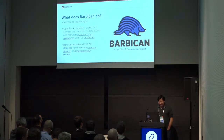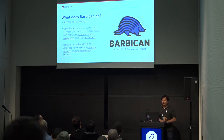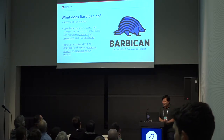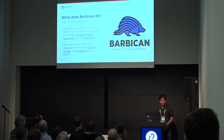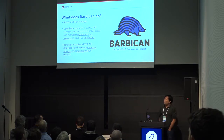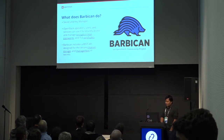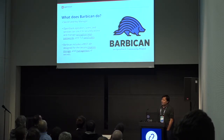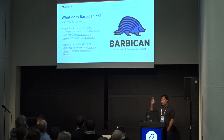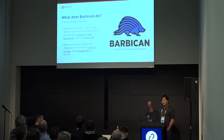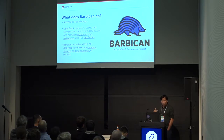As a refresher for anyone who doesn't know what Barbican is: Barbican is the secret and key manager for OpenStack. Users and operators can store things like encryption keys, passwords, and TLS certificates. One of the big use cases is Cinder volume encryption — Cinder asks Barbican to generate a symmetric key, provide a reference to it, and the key never actually leaves Barbican. When Nova wants to mount that volume, it requests that secret and mounts the volume.